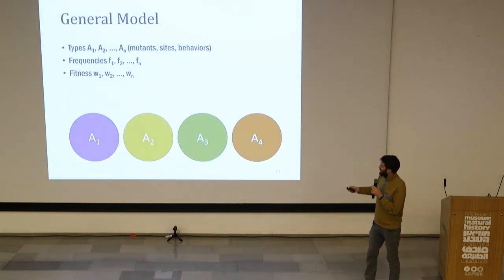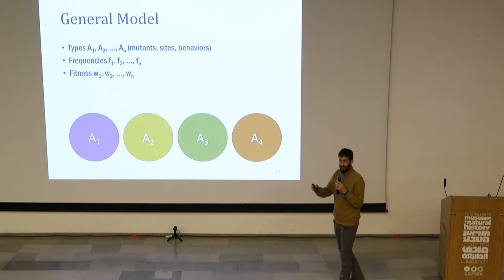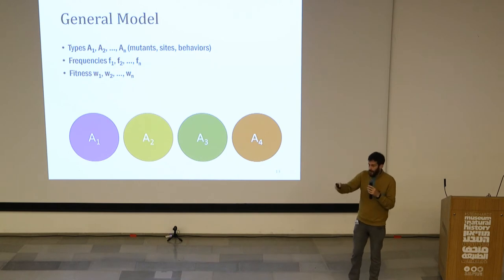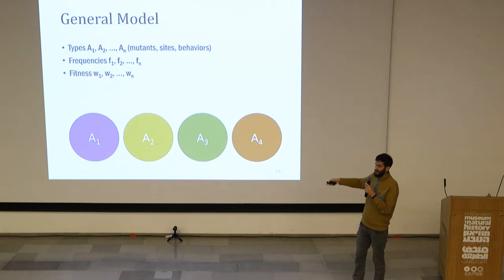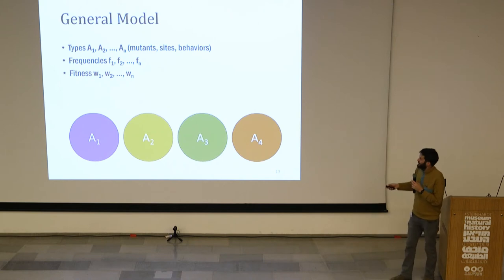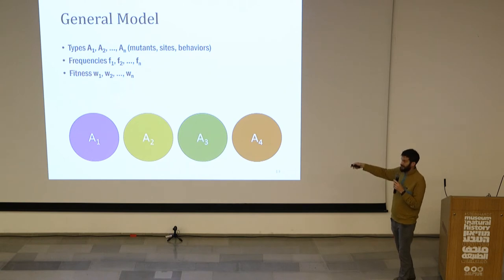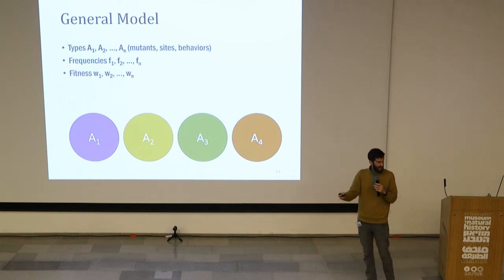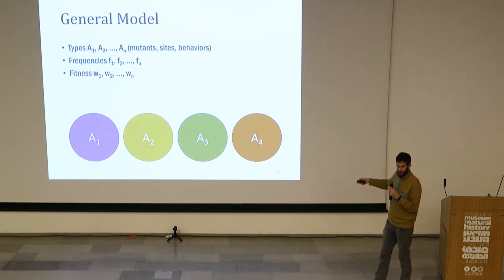In the general model, we assume that in the population we have several different types, marked A1, A2, through AN. This can be different mutants, different sites or locations, or different behaviors. Each type has a frequency in the population — F1, F2, etc. — and each type has a fitness W1, W2, etc. The fitness is basically the relative reproductive success of each type. We have four types here just for presentation, but of course we can have more.